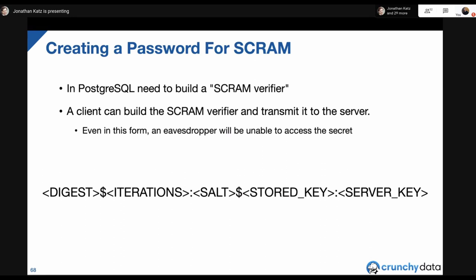To use SCRAM in Postgres we need to create a SCRAM verifier — a defined structure that includes a digest, iteration count, salt, stored key, and server key. Even in this form, an eavesdropper is unable to access the secret. You don't want someone to have your SCRAM verifier, but even if they do, it makes cracking it extremely hard. Part of password authentication is making things hard enough that it's not worth attempting to crack.